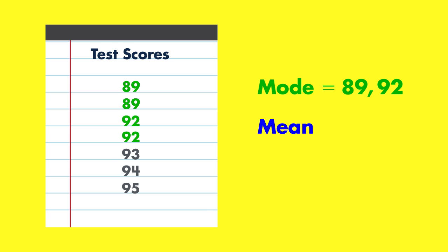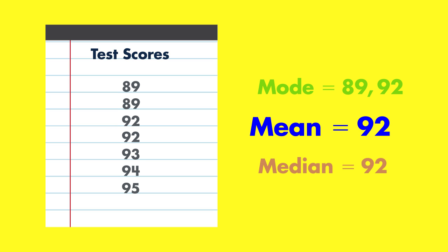The mean is 92, and the median is also 92. In this case, because the mean and median are equal, we default to the mean as the best measure of center for the dataset.